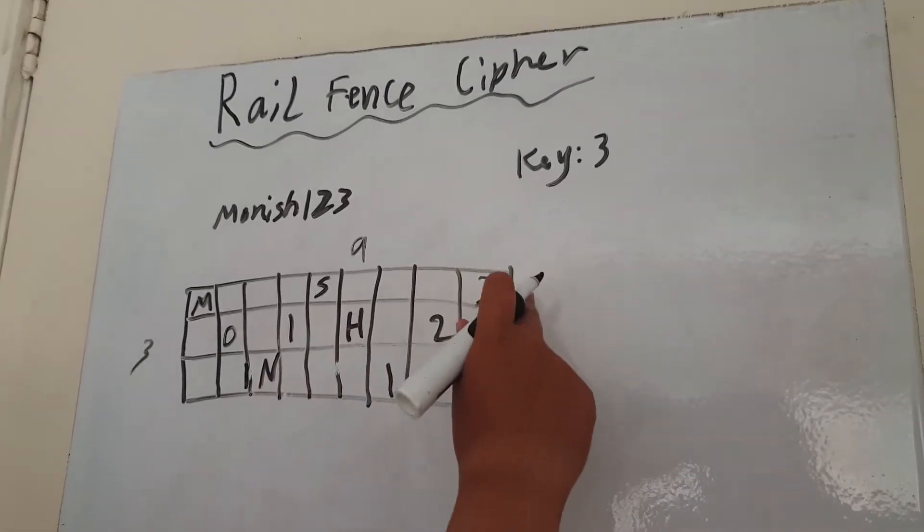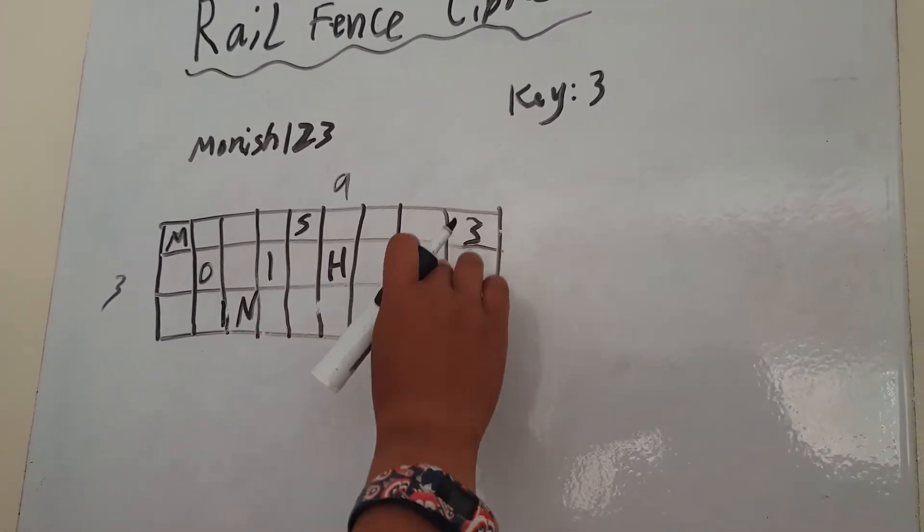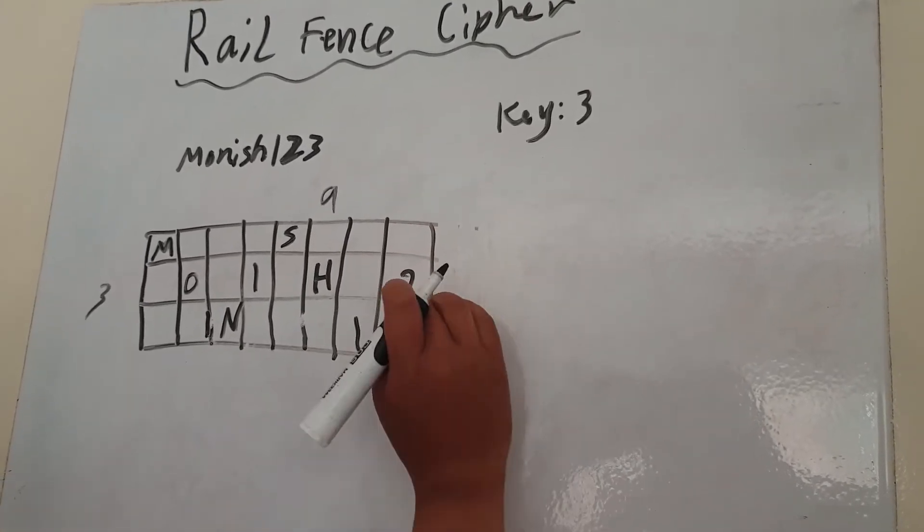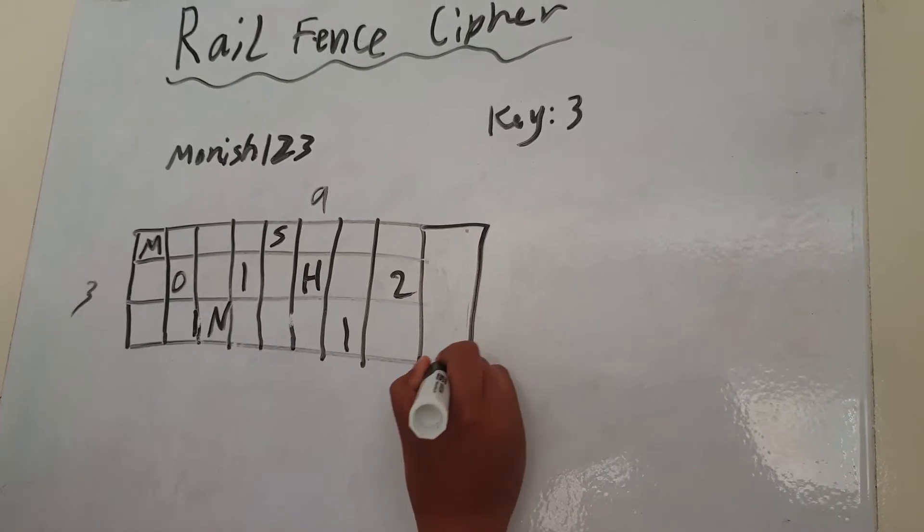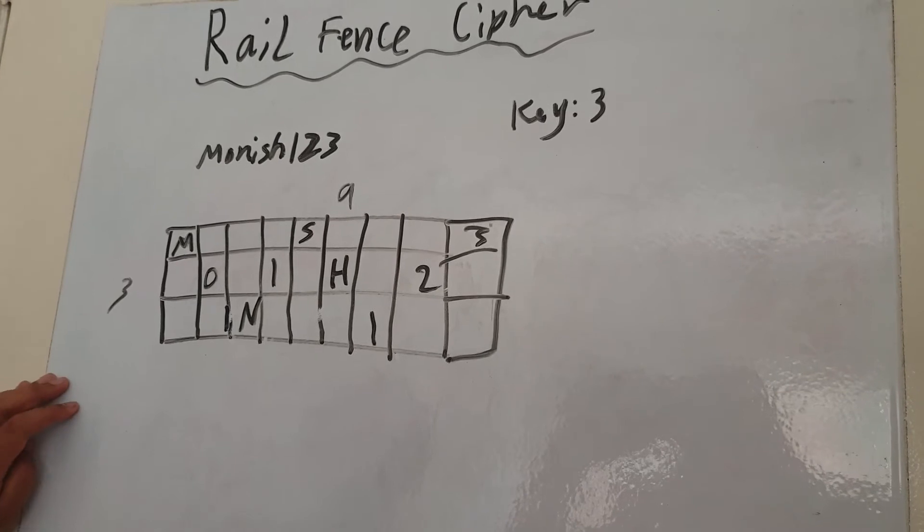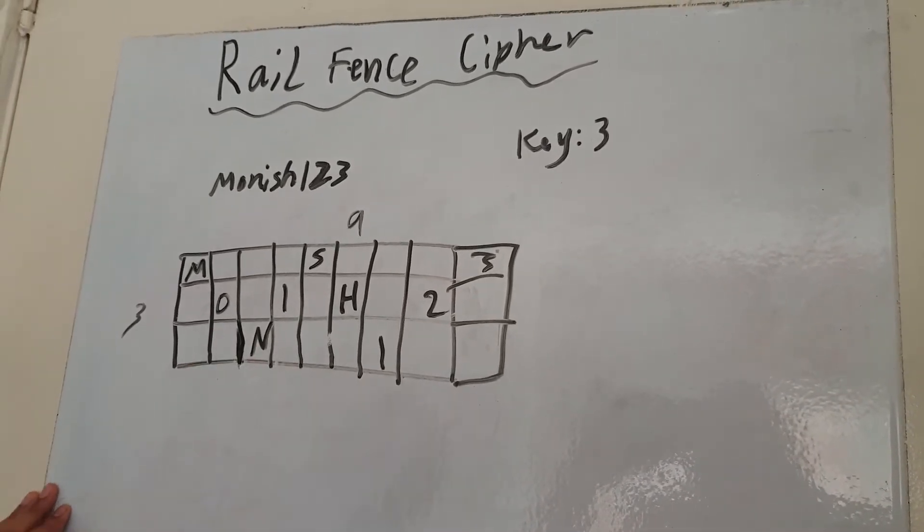And it can end anywhere. So the last box doesn't have to be the top. The last box, for example, can be, the last box can end in the middle, or it can end anywhere. So now that we've gotten that.